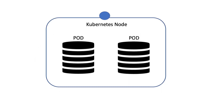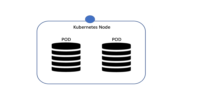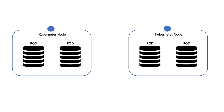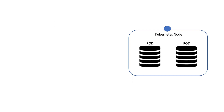There are different types of traffic flow that you need to be aware of. Firstly, pod to pod traffic with both pods on the same node. Then we have pods on two different nodes. And then we have pods to external systems that are outside of the cluster.